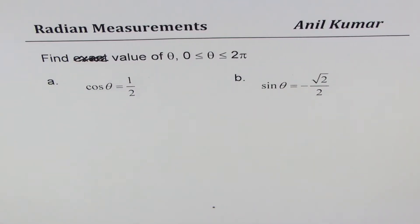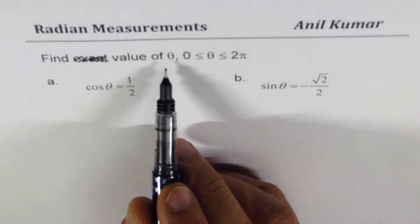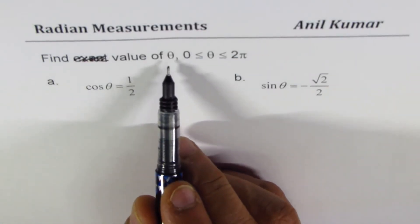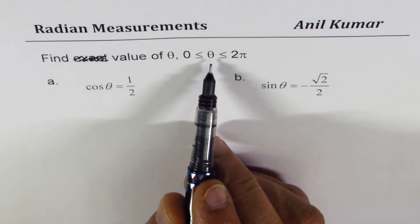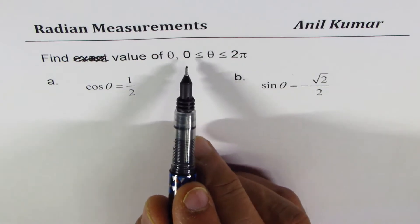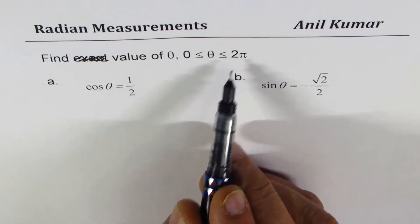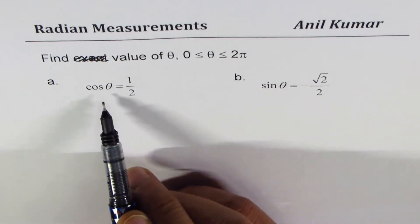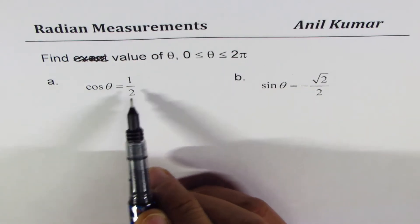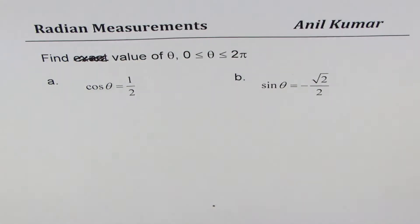In this video, I'll take up four examples and we will try to understand how to find all possible values of theta when theta is given between 0 to 2π and the value of trigonometric ratios is given to us.